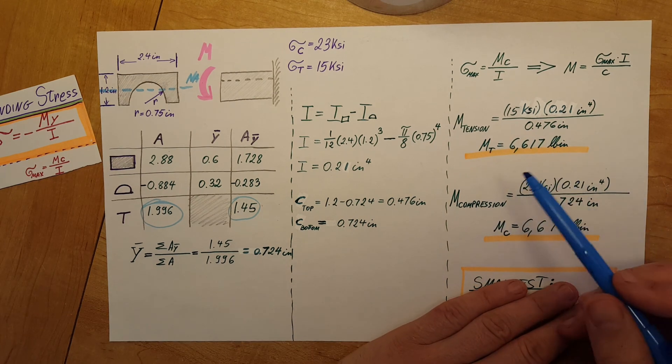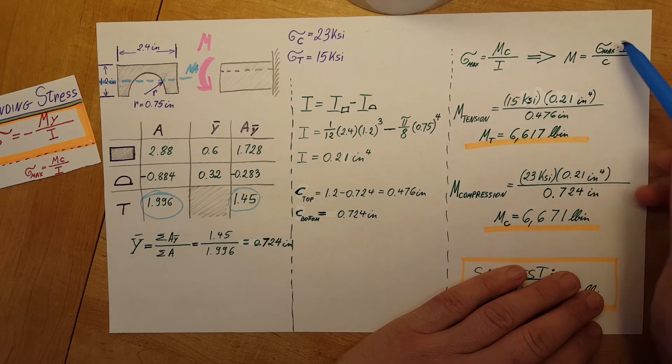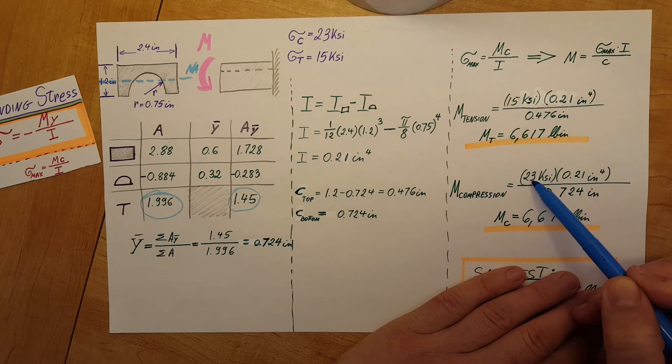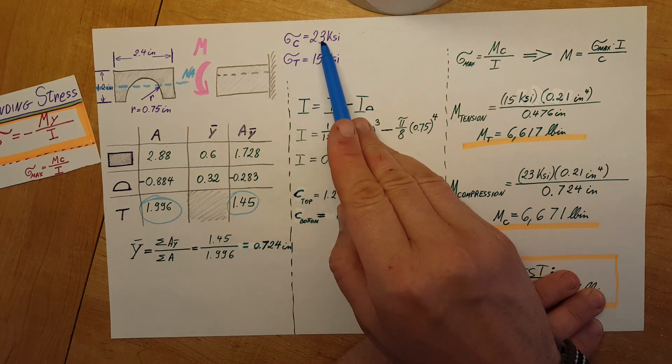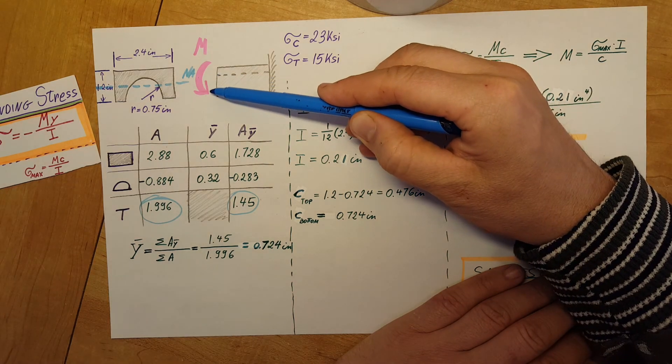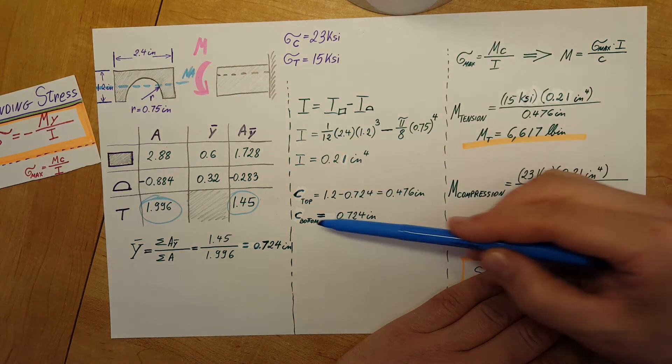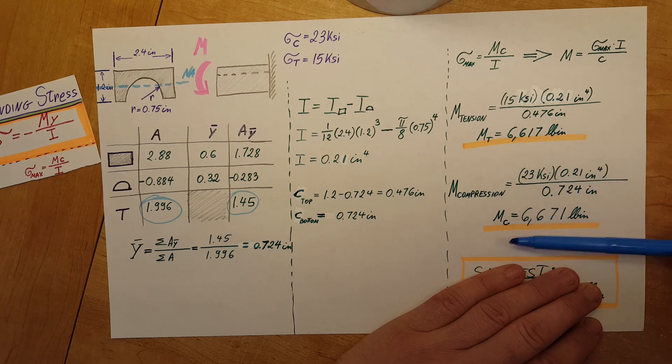Now we continue with moment for compression. Same formula. We were given that maximum stress for compression will be allowed 23 ksi. Plug it in, inertia, and then we have our C here. The C will be going towards the bottom of the material, so C bottom 0.724. Plug it in, here's our second value.